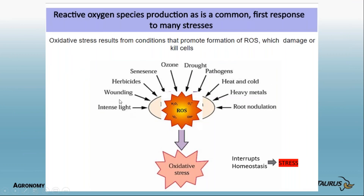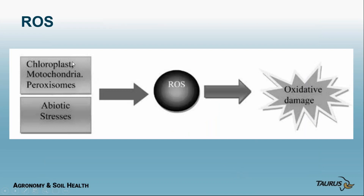Things that bring about ROS include intense light, wounding, herbicides, senescing, ozone, drought, pathogens, and so on. The free radicals include superoxide, hydrogen peroxide, hydroxyls, and singlet oxygens. This leads to oxidative stress, interrupts homeostasis, and we get stress. The chloroplasts, mitochondria, and peroxisomes all contribute to causing this oxidative damage. The enzymes involved in breaking these free radicals down — including SOD — tie up these free radicals into hydrogen peroxide, which is also toxic, but the plant in the peroxisomes converts that to water using catalase and peroxidases.